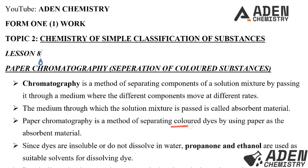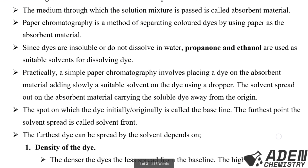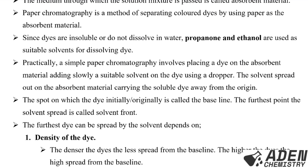Paper chromatography is a method of separating colored dyes by using paper as absorbent material. Since dyes are insoluble or do not dissolve in water, propanone and ethanol are used as suitable solvents for dissolving dye.